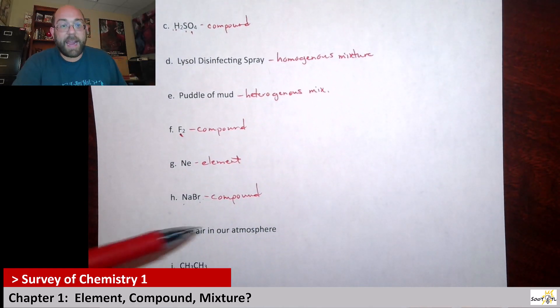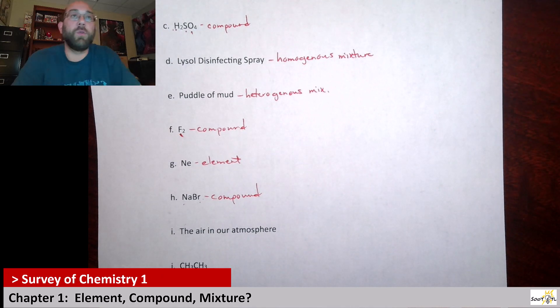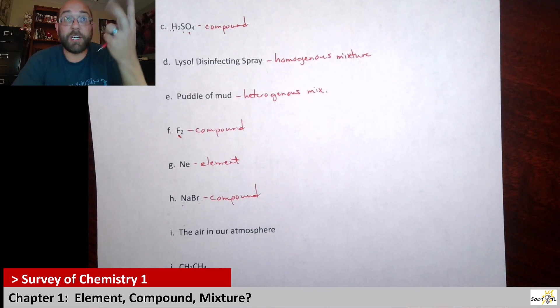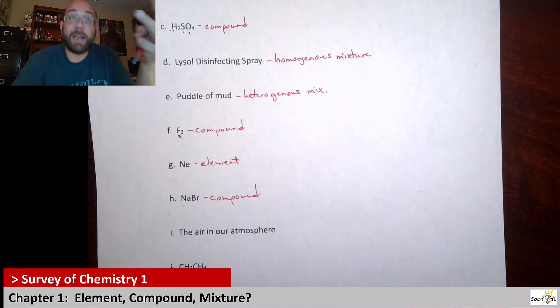For I, it says the air in our atmosphere. So the air in our atmosphere. I'm going to assume that if we just think about it in terms of the gases in our atmosphere, there's a lot of different gases there. I think you should all be aware of at least two of them, oxygen and carbon dioxide. We breathe in the oxygen, we breathe out carbon dioxide, but there's also nitrogen.